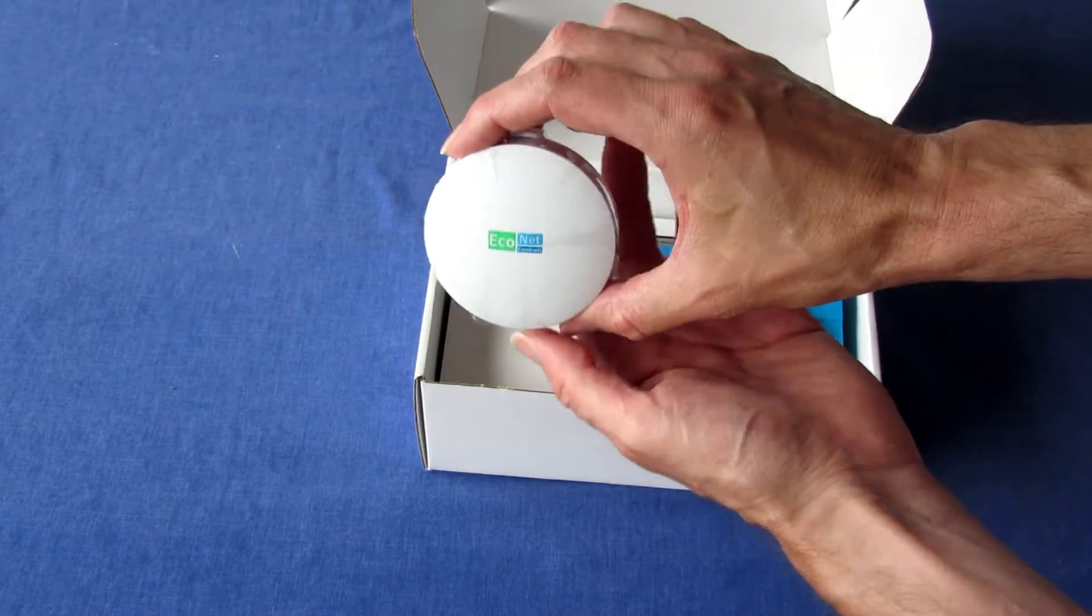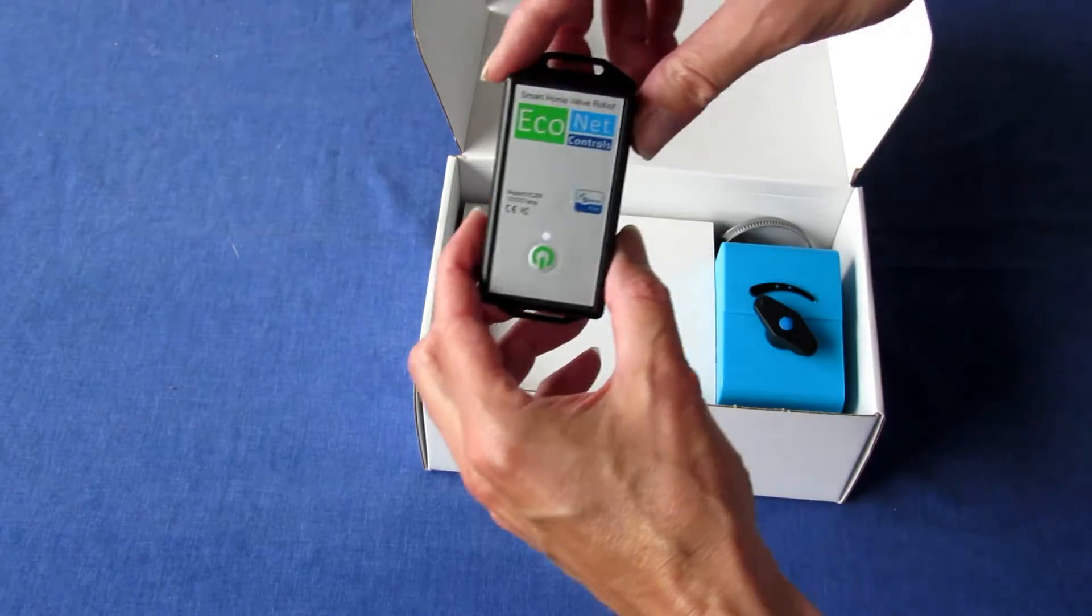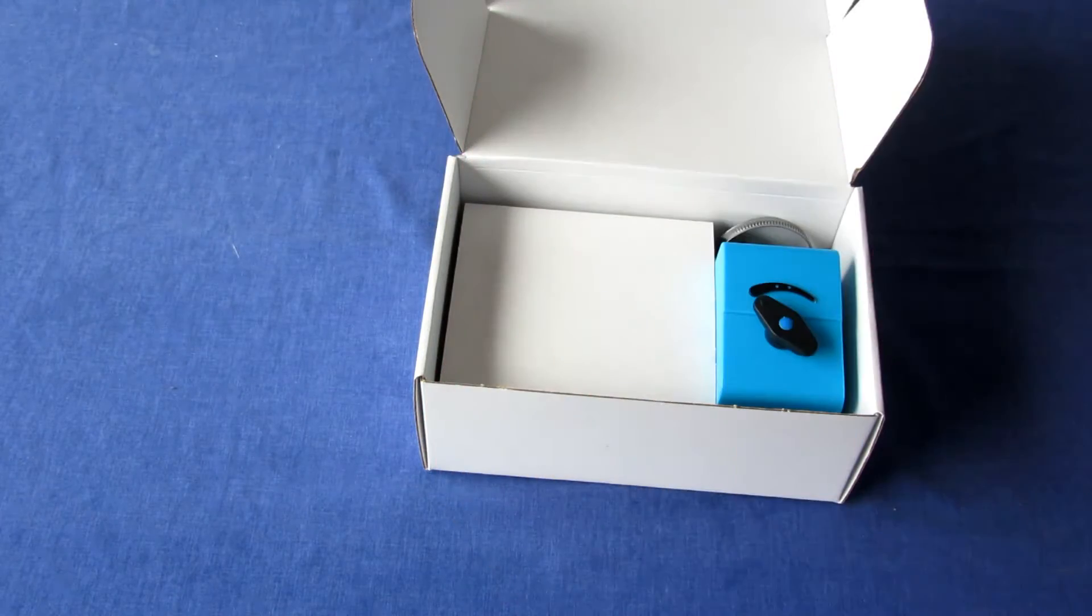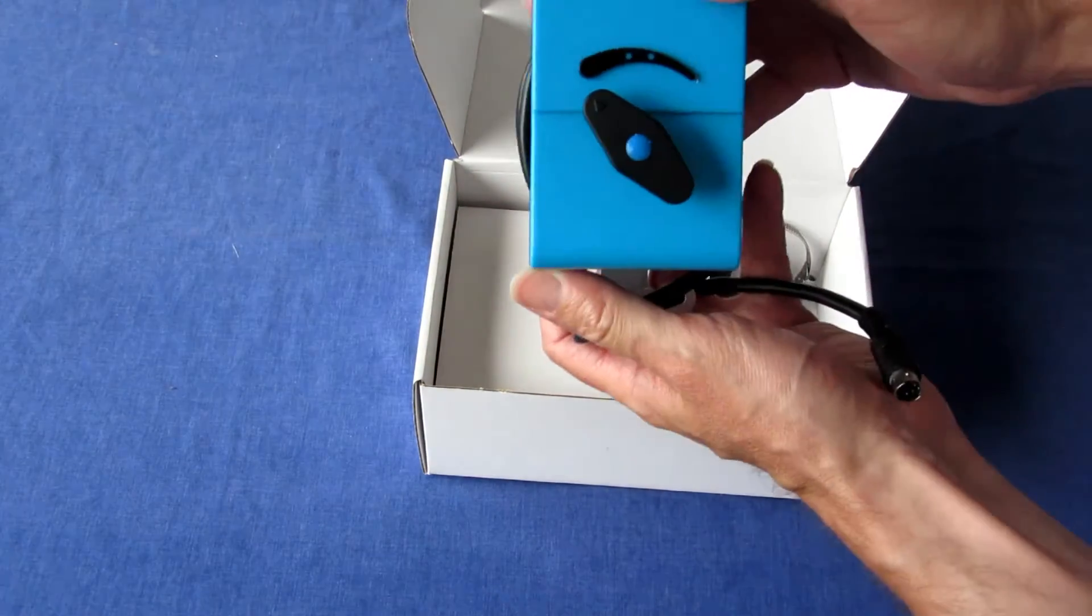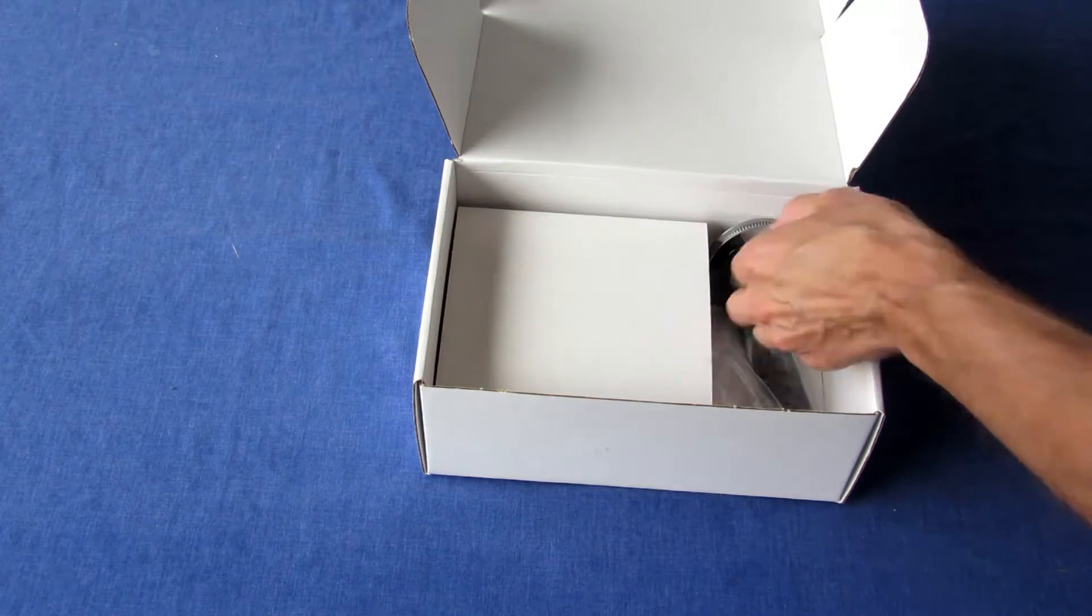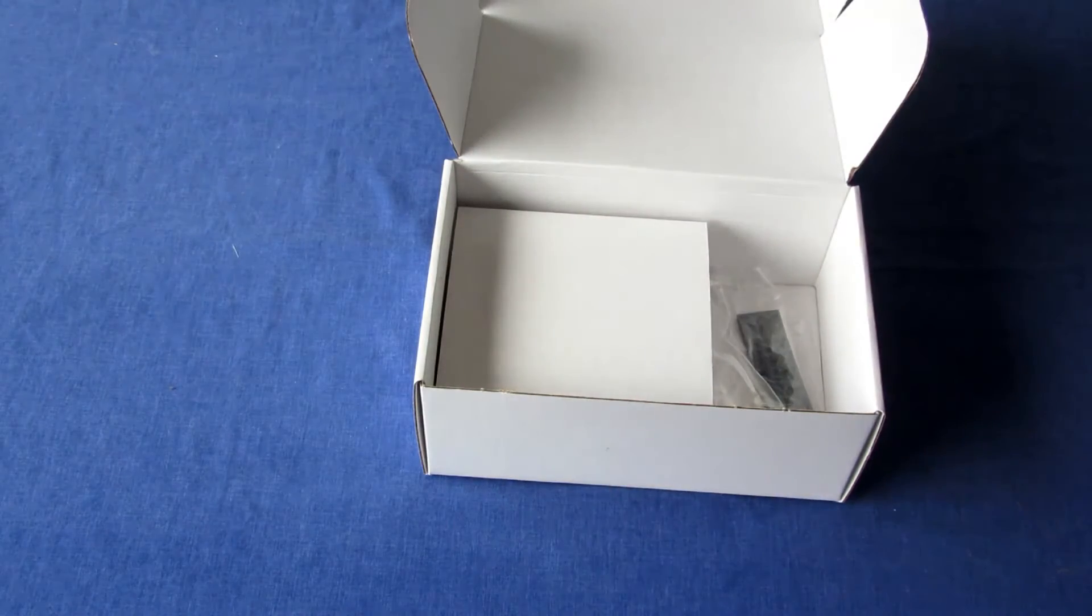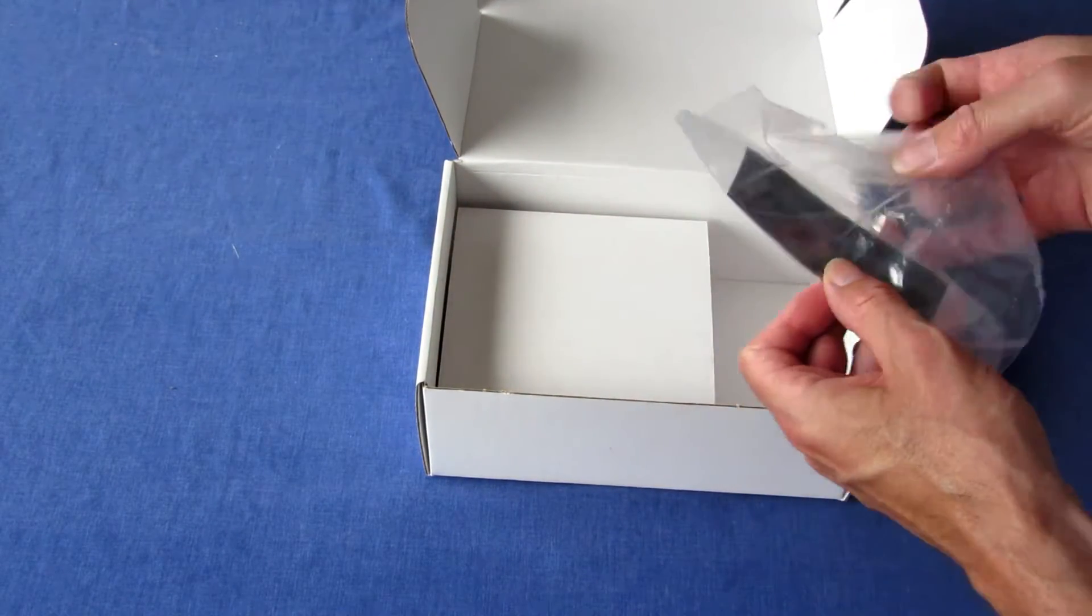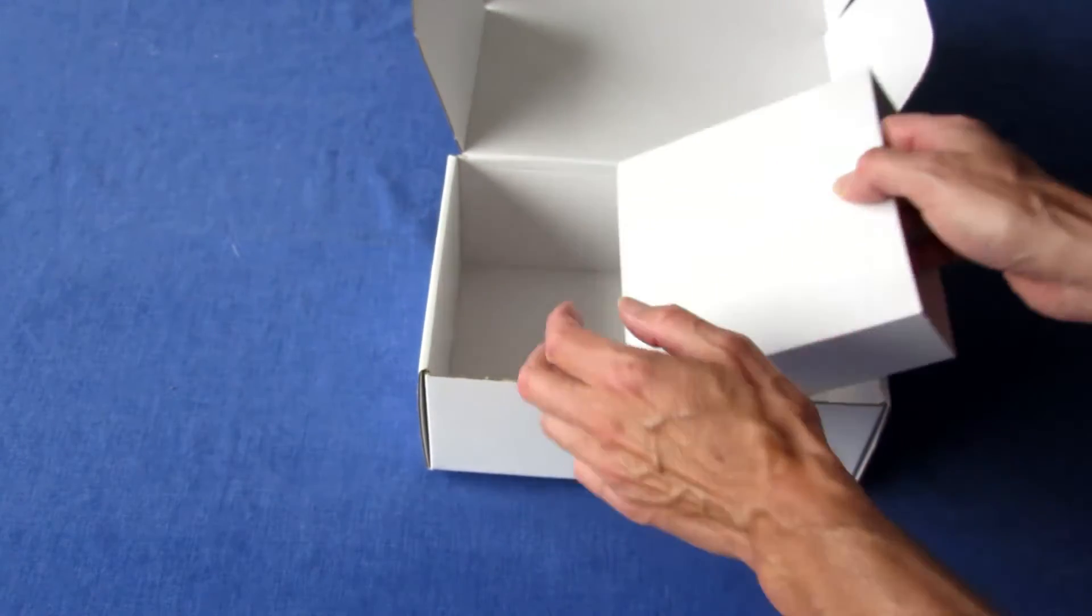An Econet Z-Wave leak sensor, the Bulldog controller, the Bulldog, the large Bulldog mount, and silicone fusion tape to wrap around your existing water valve. This gives the Bulldog mount a better grip.